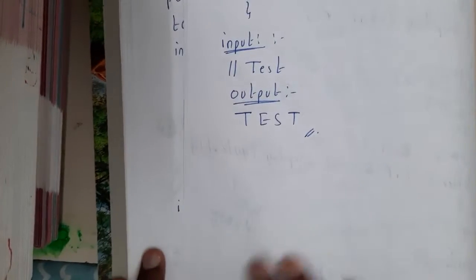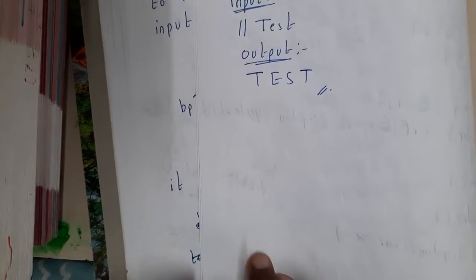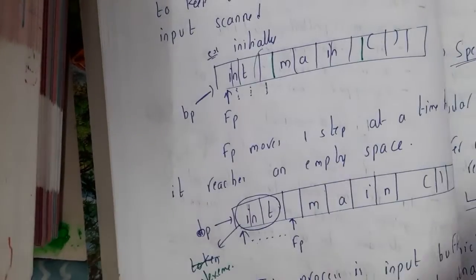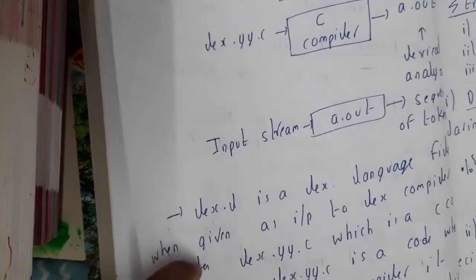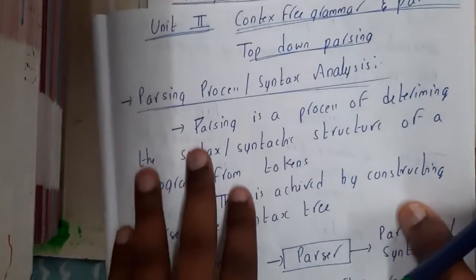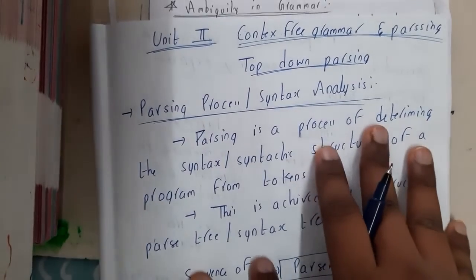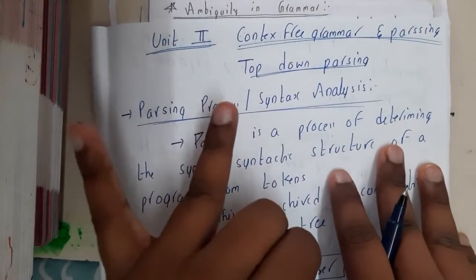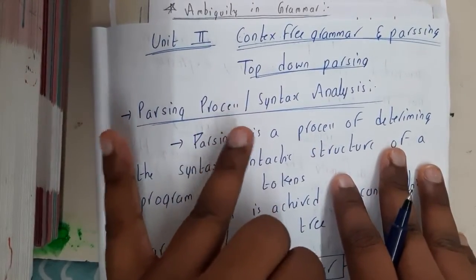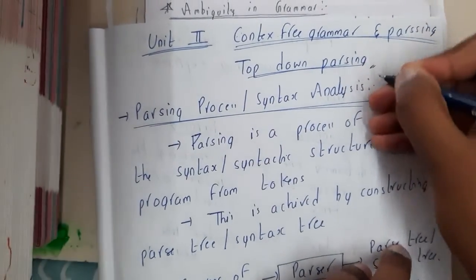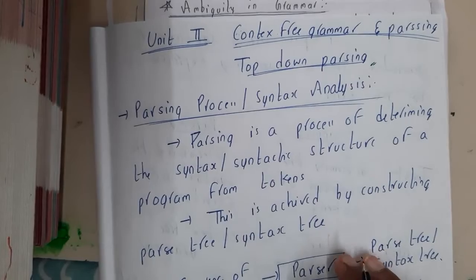I hope everyone got a clear idea on Lex tool. This was a sample code — for more examples you can check our lab manual. In the next lecture we will be starting the second unit, which is all about context-free grammar and parsing — top-down parsing. In the third unit we will discuss bottom-up parsing. Let us meet in the next lecture. Thank you for watching.